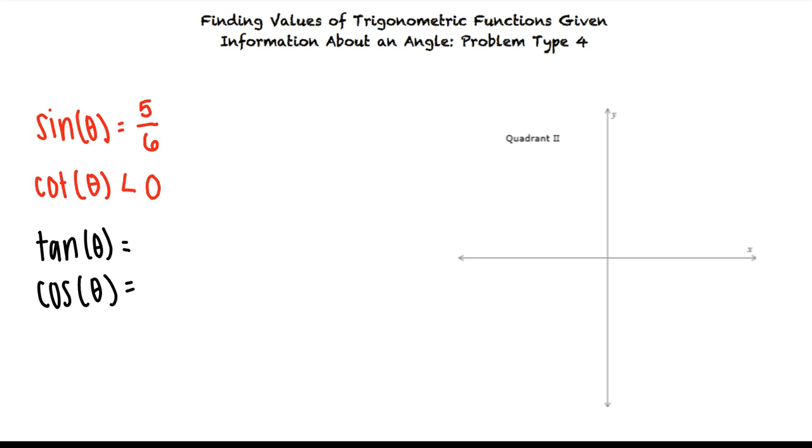To help us solve our problem we can draw a triangle where the point x comma y is on the terminal side of theta. Now to determine the desired trig function values we need to figure out what sides of the triangle we already know.